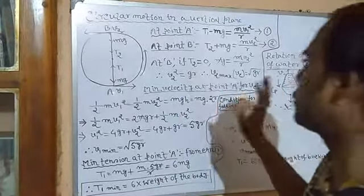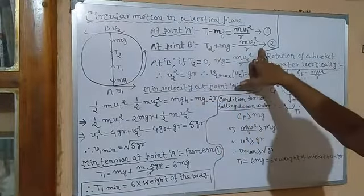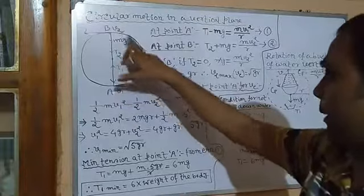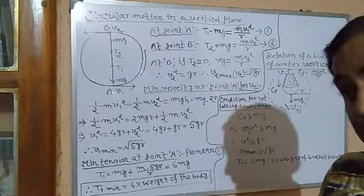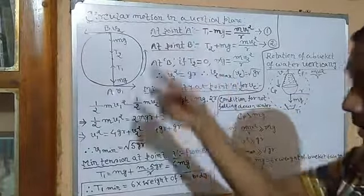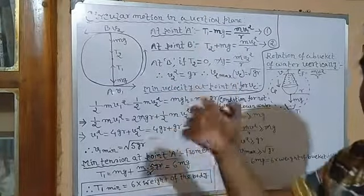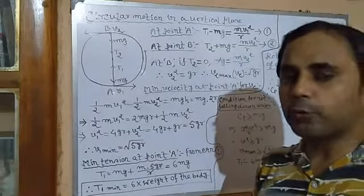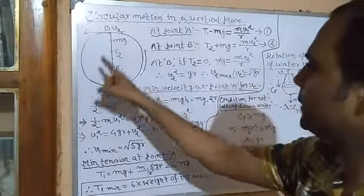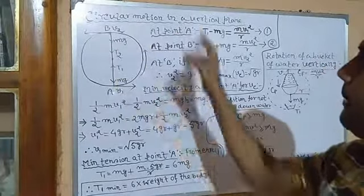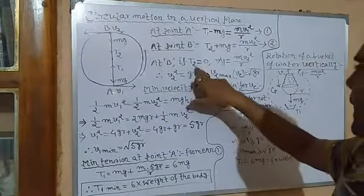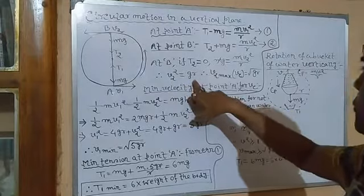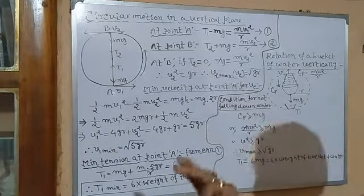Assuming the string becomes very loose, we set T2 = 0 in equation 2: mg = mv2²/R. Calculating this, we get V2² = gR, so V2_minimum equals √(gR). This is also called the critical velocity at the top. If the velocity of the stone drops below this value, the string becomes extremely loose and the body will fall down. So √(gR) is the critical velocity at point B — the top.